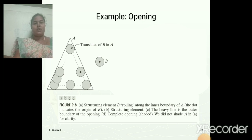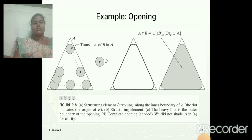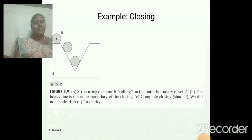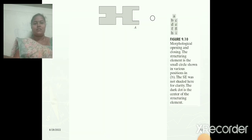This is an example for the opening function. The given shape is a triangle. It is opened using structuring element B, which is a circle. This is the output obtained — the corners are smoothened. This is the example for the closing operation. Here we are using a circle structuring element, and this is the output obtained.